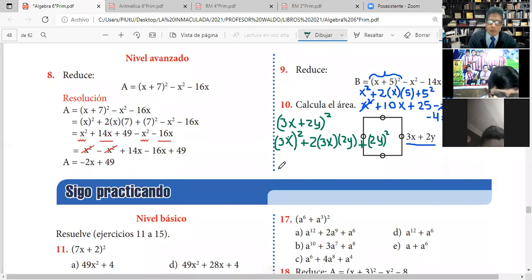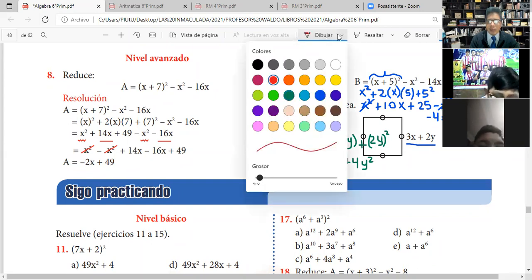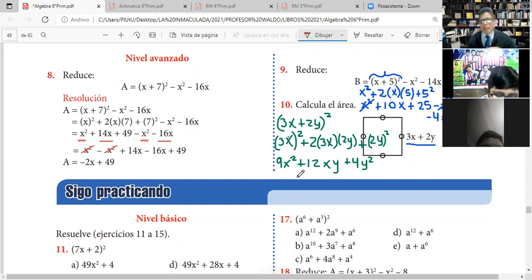Ya está. Ahora 3X al cuadrado desarrollamos 9X al cuadrado, más 3 por 2, 6, 6 por 2, 12, 12XY, más 4Y al cuadrado. Y listo, ya estará ahí. Me preguntan el área. Bueno, el área es 9X al cuadrado más 12XY más 4Y al cuadrado.